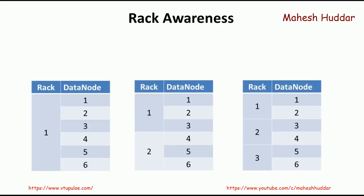The next concept is Rack Awareness. When it comes to an HDFS cluster, it has mainly three components: a single Name Node, one optional Secondary Name Node, and multiple Data Nodes. Because there are multiple Data Nodes, there is a possibility of arranging these Data Nodes in different ways. We can arrange all Data Nodes into one group called a Rack.